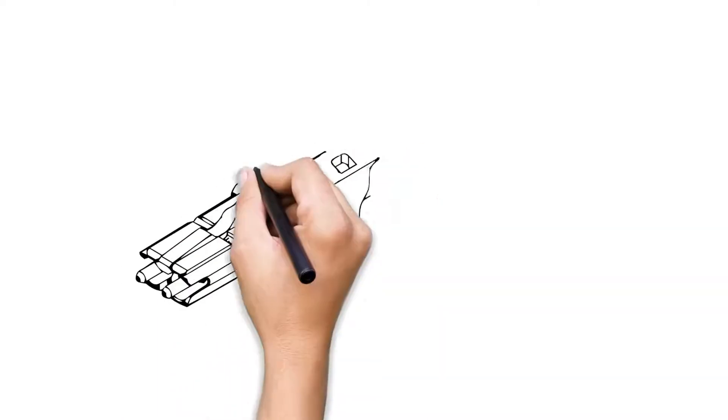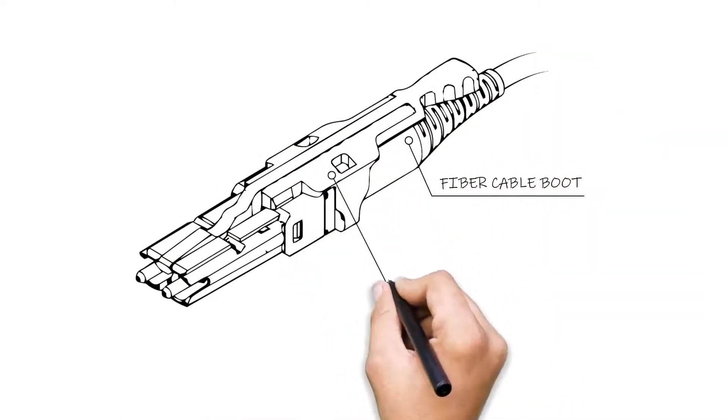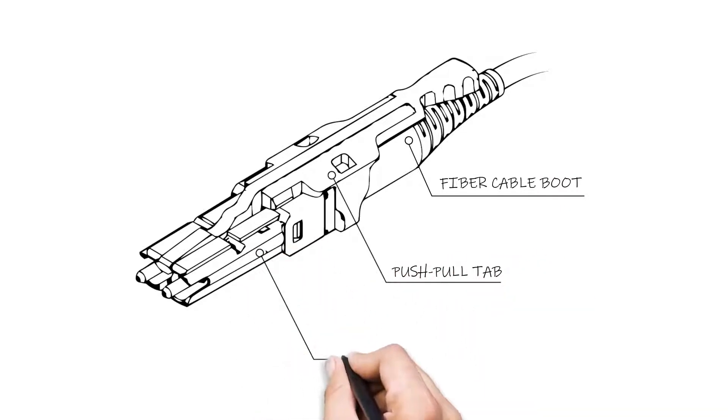Looking closer, the CS connector has three main sections, most notably a miniature single-position connector plug frame, which is characterized by dual cylindrical spring-loaded butting ferrules. Secondly, a convenient push-pull tab for mating and demating the connector. And finally, the fiber cable boot to provide strain relief.